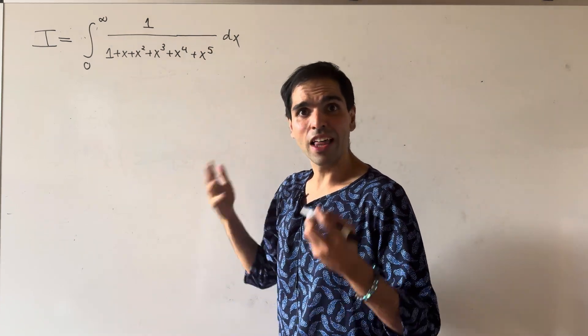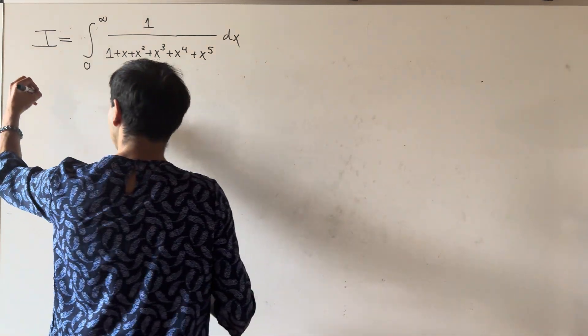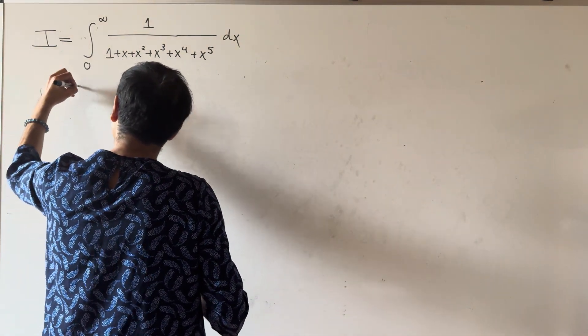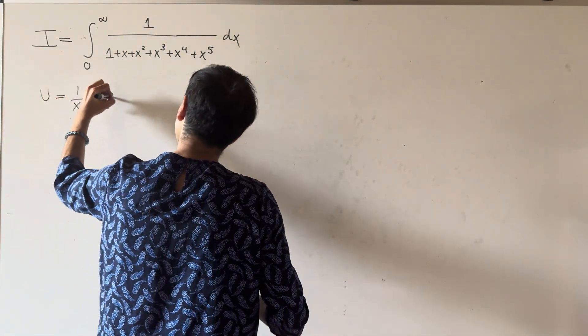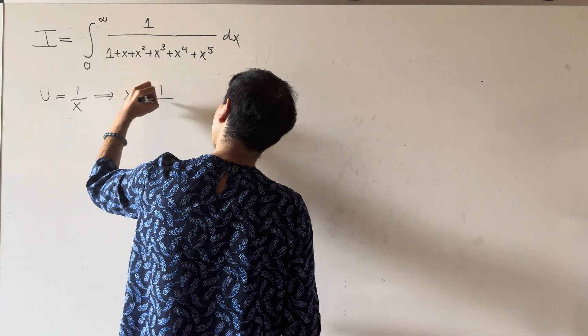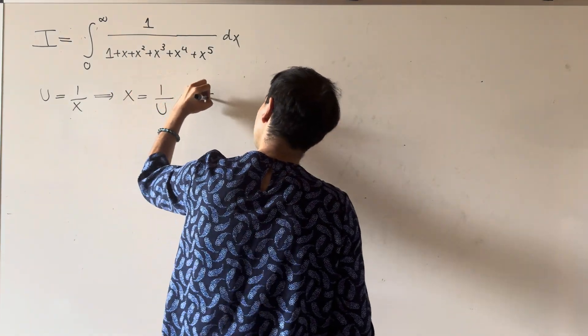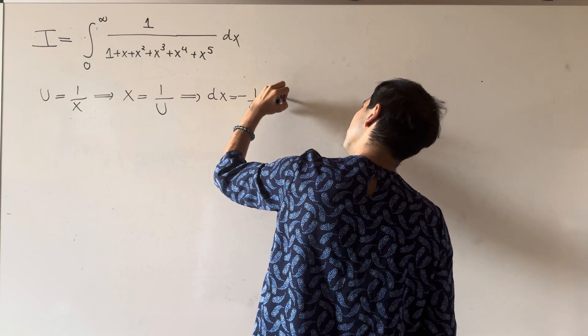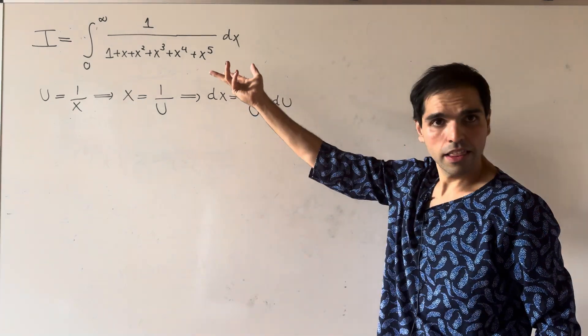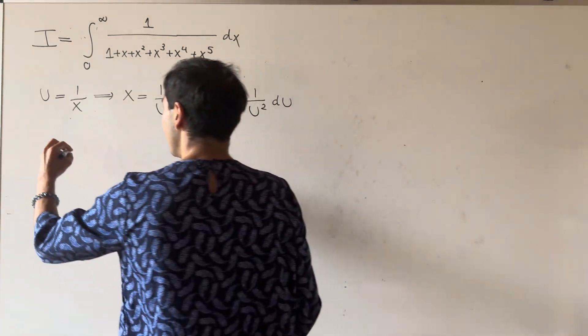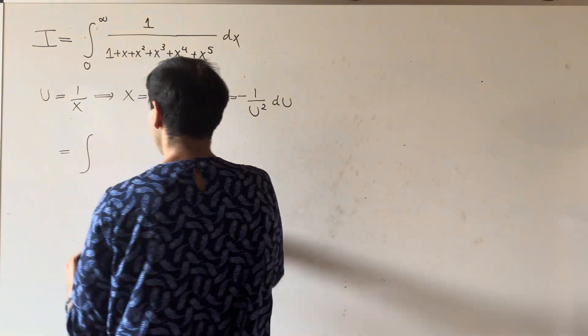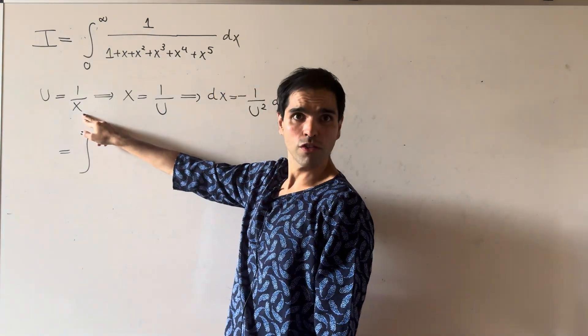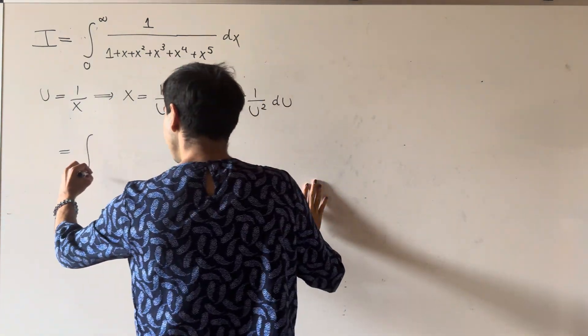In order to do that, let's use a u substitution. Let u be 1 over x, so x is 1 over u, and dx is minus 1 over u squared du. Therefore, the integral becomes the integral from 1 over 0, which is infinity, to 0...